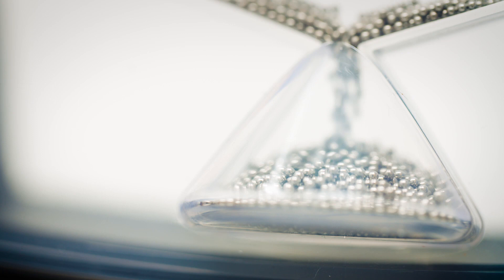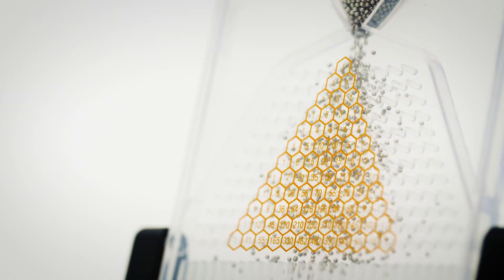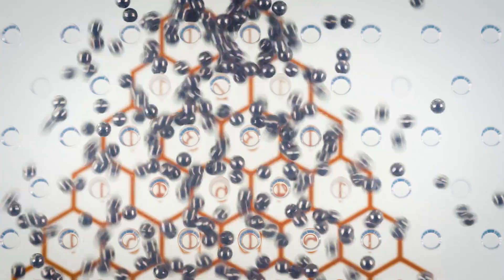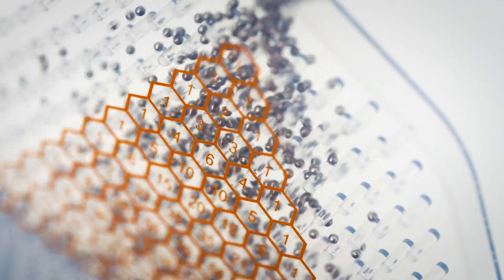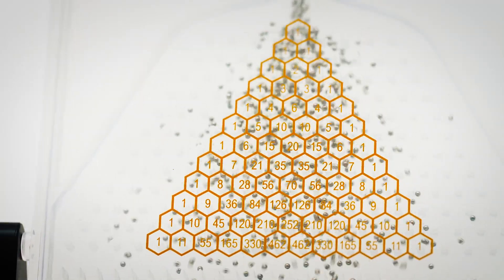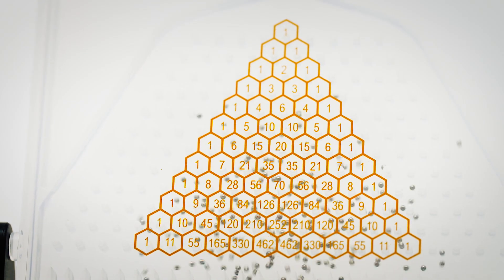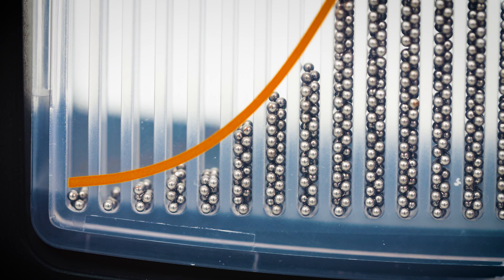The distribution forms as beads navigate their way through a forest of pegs, arranged so that each time a bead hits a peg, it's randomly deflected to the left or the right with equal likelihood. This means there are many different possible paths a bead can take before it exits the pattern and comes to rest in one of the bins below.